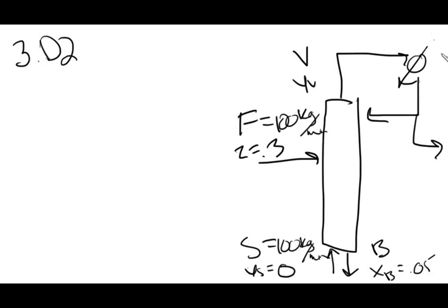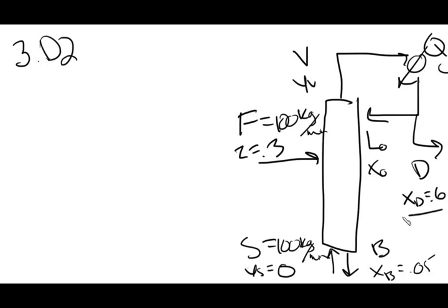We're going to have heat leaving the system at the condenser. Then we have the reflux stream — we don't know the flow rate or the weight fraction there. And then we have the distillate stream, where the weight fraction is 0.6. Since we know that the weight fraction of the distillate is 0.6, we actually know that the reflux weight fraction is also 0.6, because there's no separation happening at the condenser.